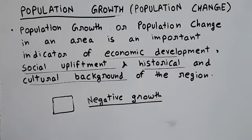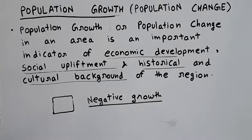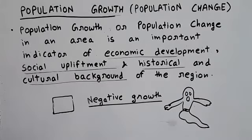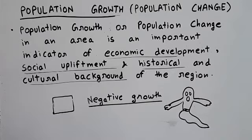Secondly, in terms of social upliftment, people may have left that region because there was no equality — there were conflicts between majority and minority, religious riots. Some places are also abandoned due to their historical background, like rumors of being haunted — for example Bhangarh Fort or Meerut's DP Block, which are very haunted places.